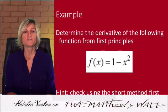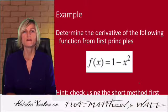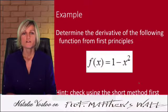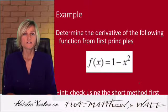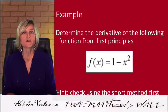So for example, this function, f of x is equal to 1 minus x squared. Using the short method, you should be able to find out that the derivative is just going to be minus 2x.